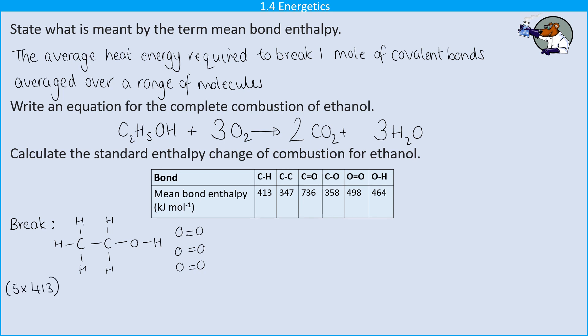So here I'm going to start out with five lots of 413. So there are the five carbon-hydrogen bonds and then move on through each of the other bonds in turn, adding those into my calculation. And eventually I work out that the overall energy required to break all of those bonds is going to be 4728 kilojoules per mole of starting ethanol.